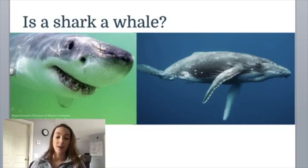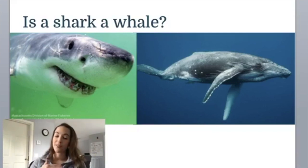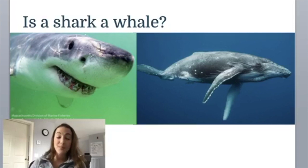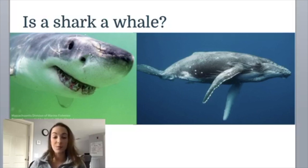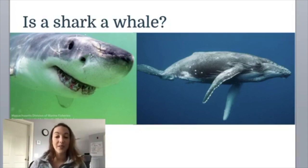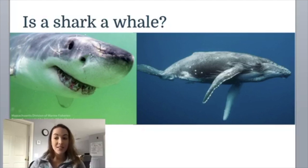Mammals also have to give live birth — all mammals give live birth to their young. And another characteristic is that mammals produce milk to feed their young as they are growing. Last but not least, we breathe air. That is why you notice dolphins or whales swimming in our oceans come up to the surface to breathe before going back down to dive. Those are the differences between a shark and a whale.